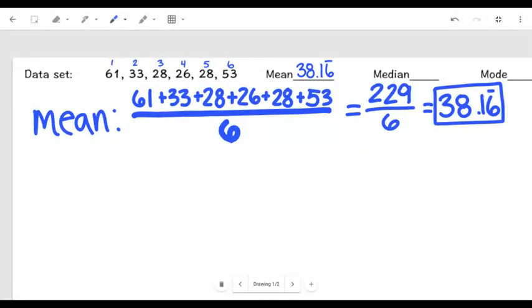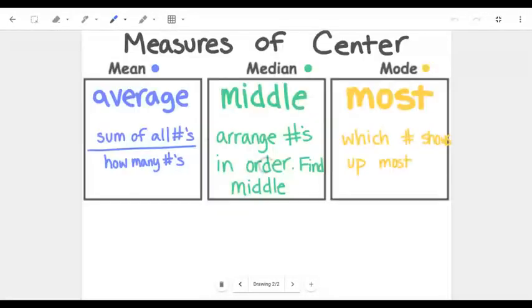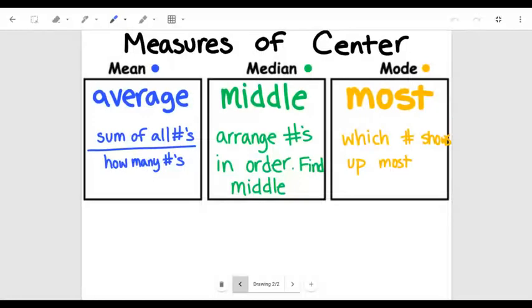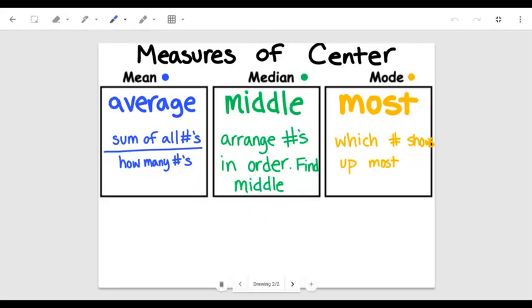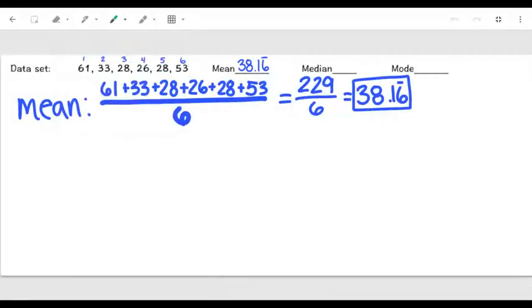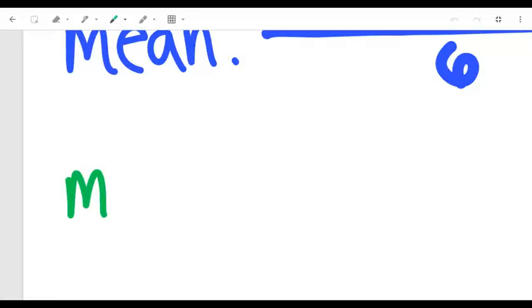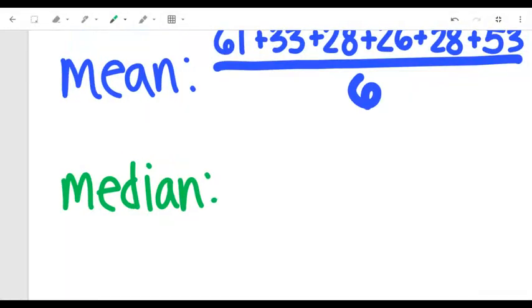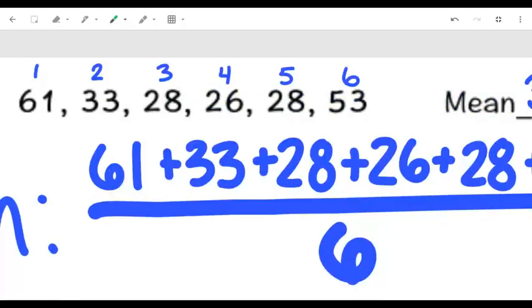I'm going to come up here and I'm going to write that in as my mean, 38.16. I put that little line over there because it's really 38.16 repeating. So that's our mean. Well, now we need to find our median. If we're going to find our median, our median is the middle number. But the point is that we have to arrange the numbers in order before finding that middle.